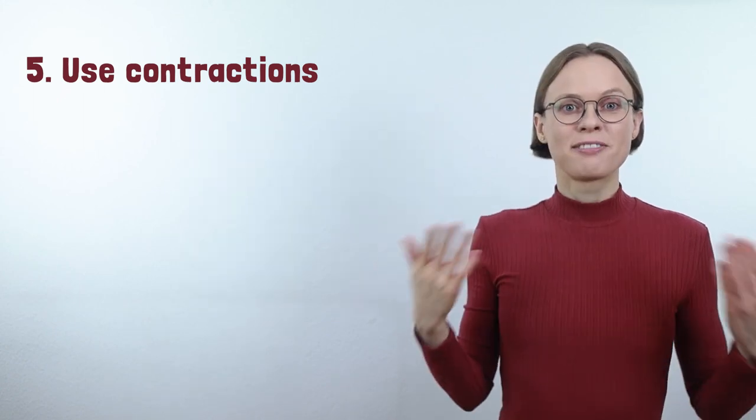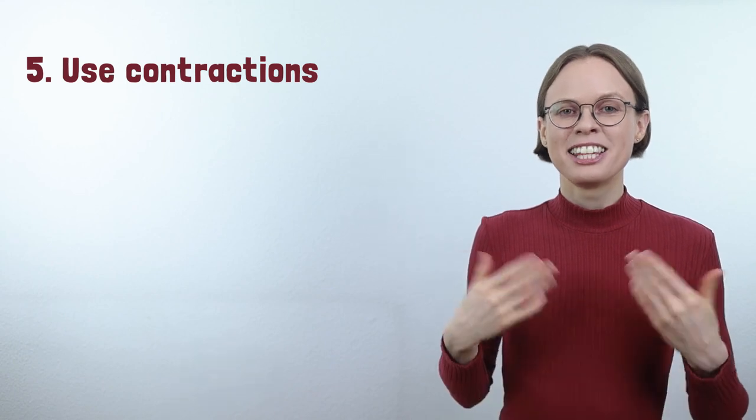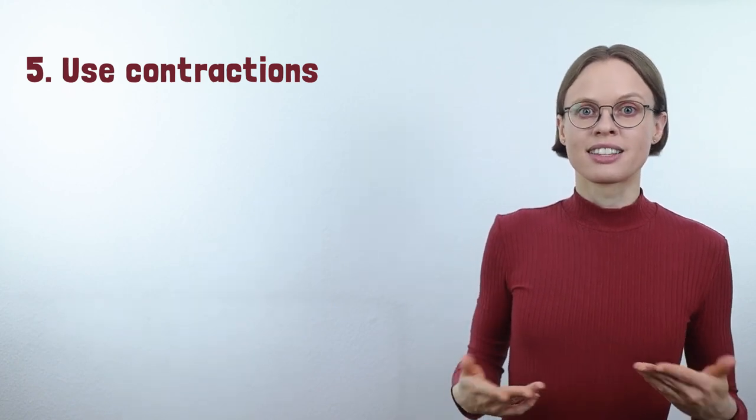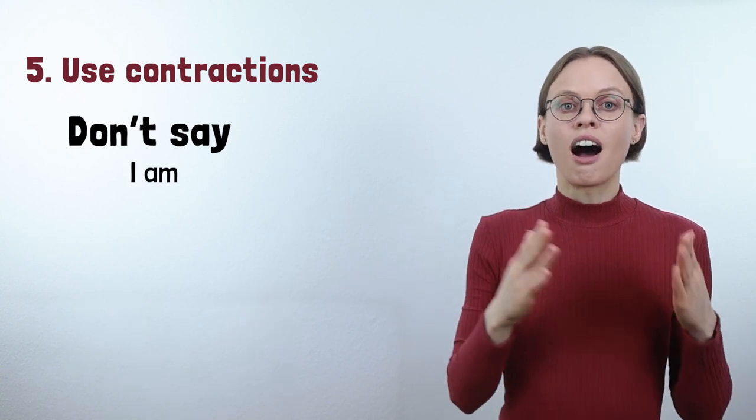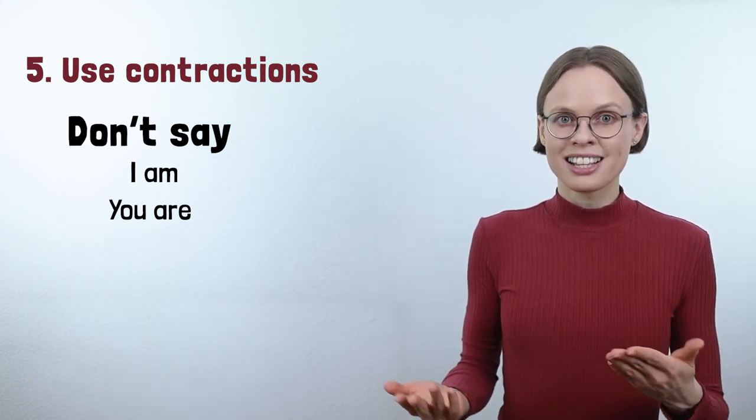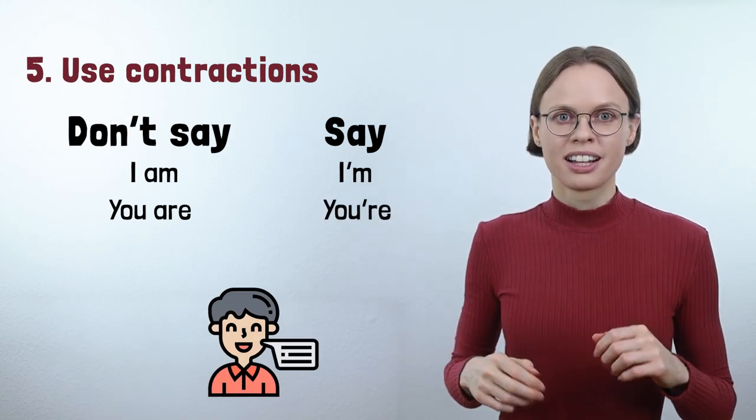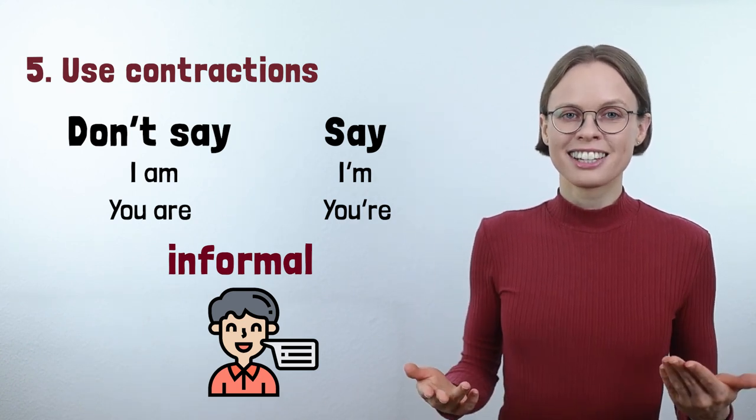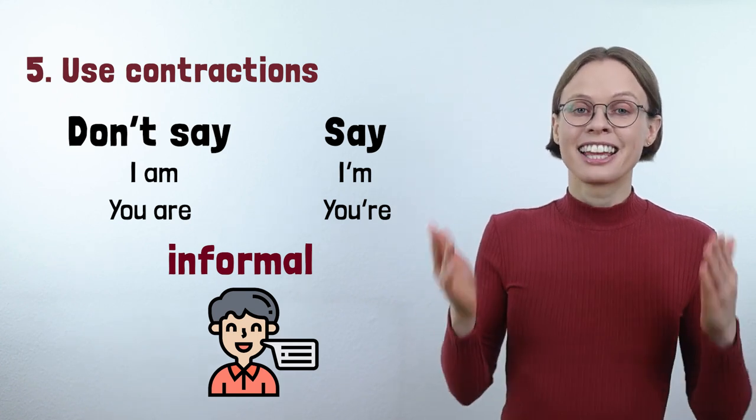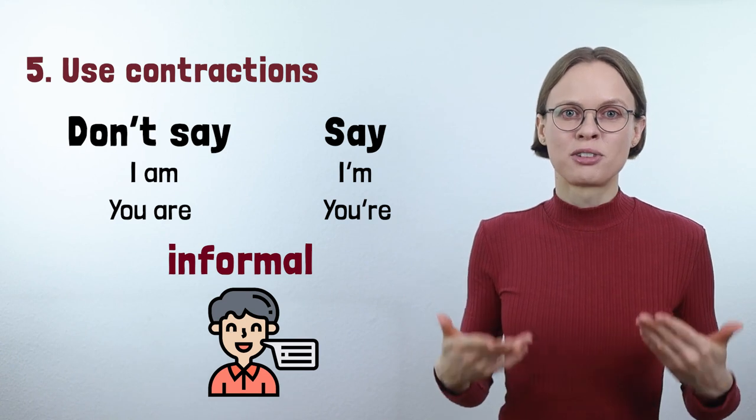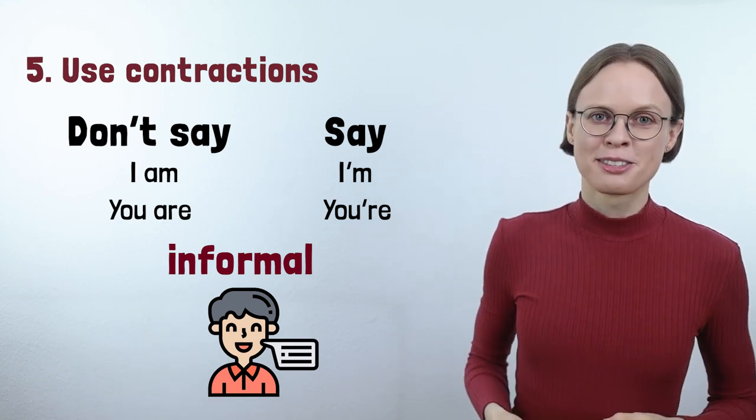Let's check out hack number five: Use contractions. If you want a high TOEFL speaking band score, you must show the TOEFL examiners that you speak English how it's usually spoken. For instance, English native speakers don't say 'I am' or 'you are' when speaking. Instead, they use contractions. They say 'I'm' and 'you're.' This is informal language. The TOEFL speaking test is informal, so you can definitely use contractions. In fact, if you do this, the examiners can see that you know how English is spoken in an informal context, and this will improve your TOEFL speaking score.